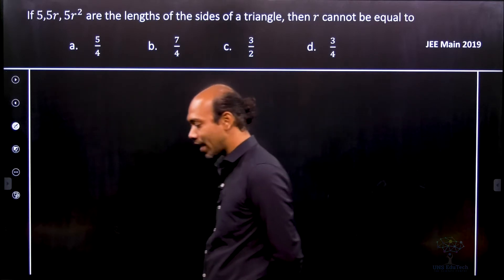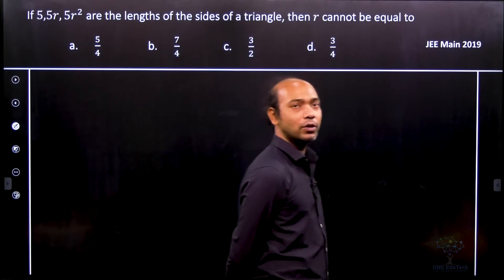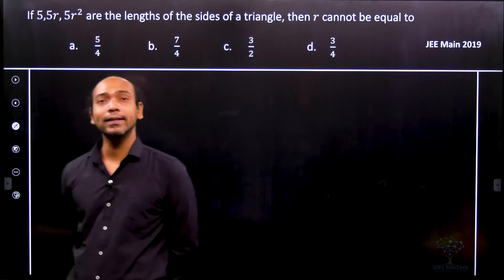So what is the condition of a triangle? Based on the length of the sides, it says that the sum of the two sides must be greater than the third side.